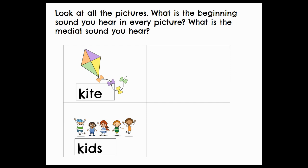Now I want to point something else out to you. Listen to that medial sound in kite. K. I-T. What does the vowel say in kite? It says I. It says the long I sound. Listen for the vowel sound in kids. K. K-I-D-S. I. Hey, it sounds, it says the short I sound.